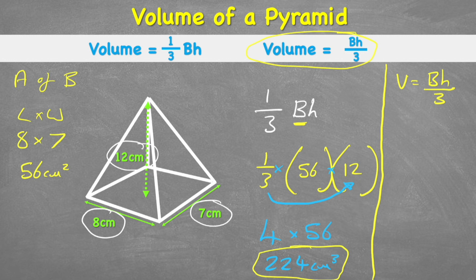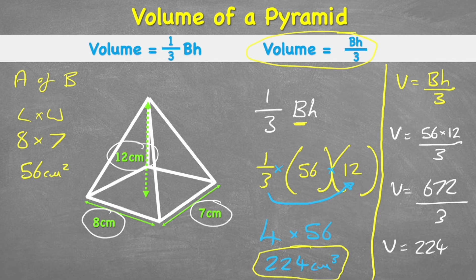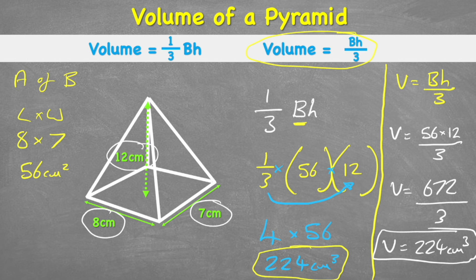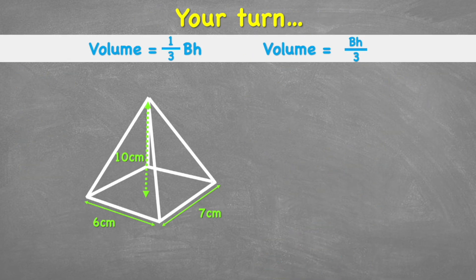So again, volume equals area of the base, which we said was 56. Height was 12 divided by three. So therefore, volume equals 672, which is the product of 56 and 12, divided by three, therefore equals 224 centimeter cubed. So we get exactly the same answer, just a slightly different way of looking at it. And this works because essentially when you multiply a fraction, we are essentially dividing as well.